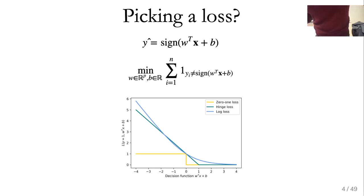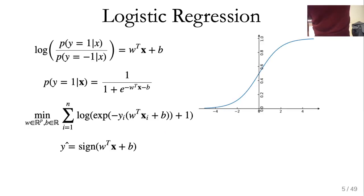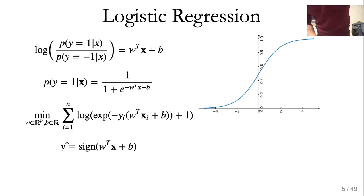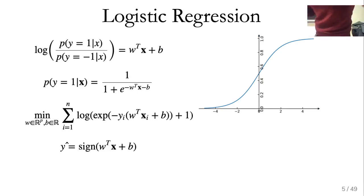For logistic regression — which is the log loss — there's a lot of math, but it's basically algebra. One way to think of logistic regression: the regression part comes from W transpose X plus B, and it's regressing over the log odds. We use one and negative one notation because it makes the formula look nicer — it's the log of the ratio of the probability of the positive class divided by the probability of the negative class.